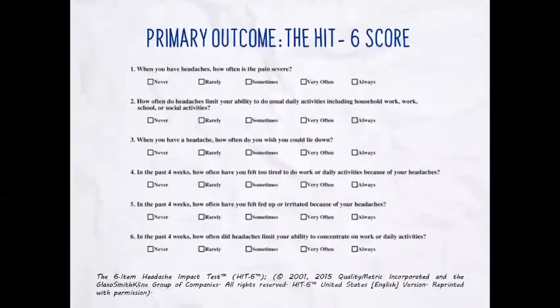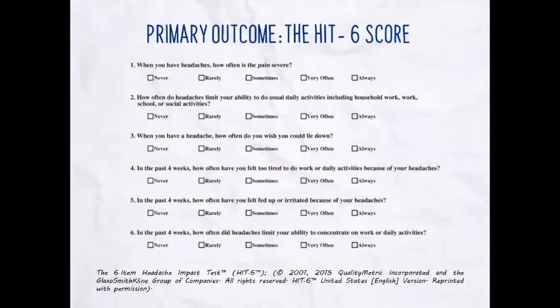Here's the HIT-6 score. It has six questions and the answers all have the same format, going from never, to rarely, sometimes, very often, and always. So it looks like an ordinal scale.